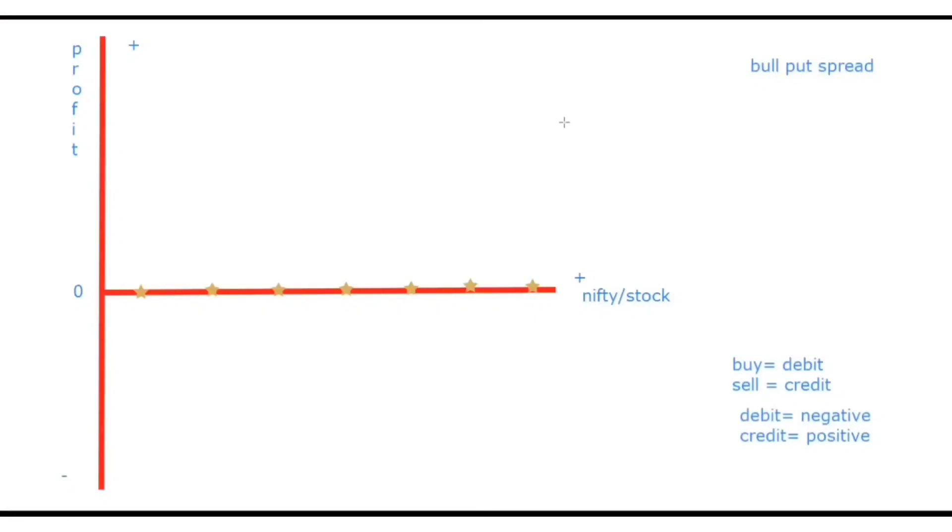So now bull put spread, what is a bull put spread? A bull put spread is opposite of a bear put spread. It's easy. But then in a bear put spread you buy an ATM put and you sell a lower strike price put. Right.